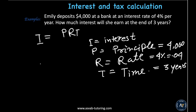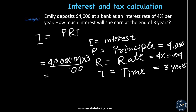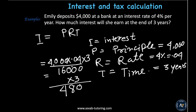Multiply: 4000 times 0.04 times 3. First, 4000 times 0.04 — forget the decimal: 4 times 4 is 16, then move two decimal places to get 160. Multiply 160 by 3: 3 times 6 is 18 carry 1, 3 times 1 is 3 plus 1 is 4 — the interest is $480.